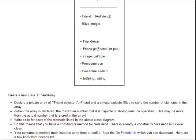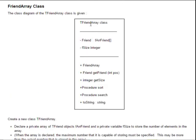And then of course our methods for this class would be these. That one has to be the constructor because it has the same name as the class. So this is the constructor — it's a default constructor. I have a function called get friend which returns a friend, so that's an object of the previous class, and it has this parameter as an input parameter. I have a function called get size which is an integer function. And I have a sort procedure and a search procedure, and of course a two string method right at the end.